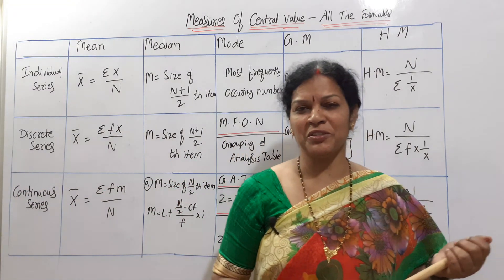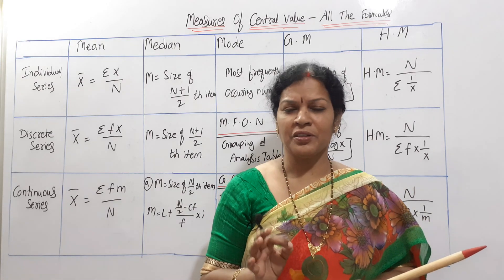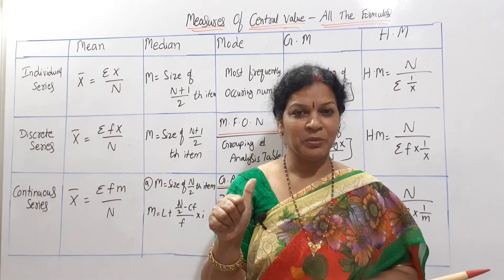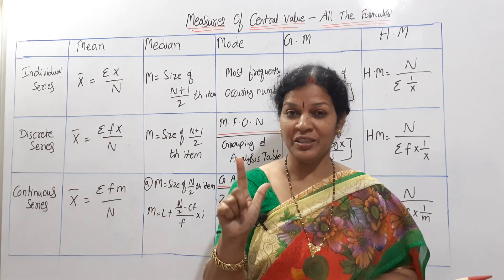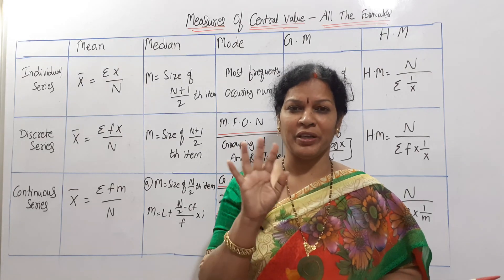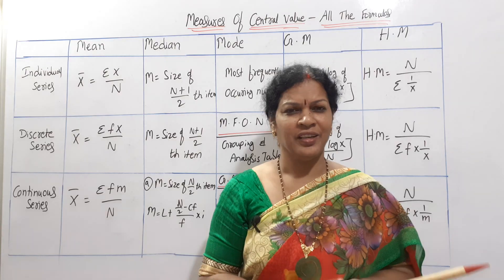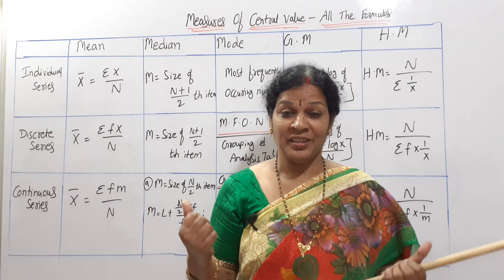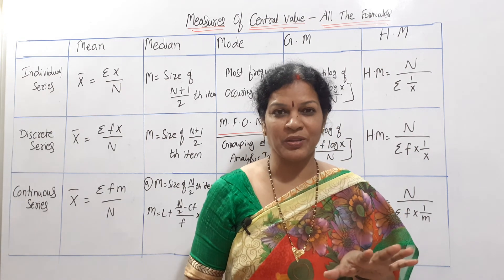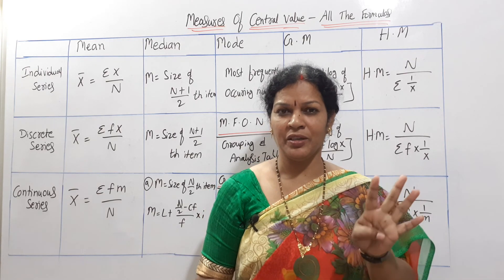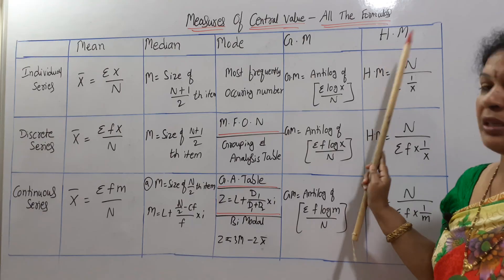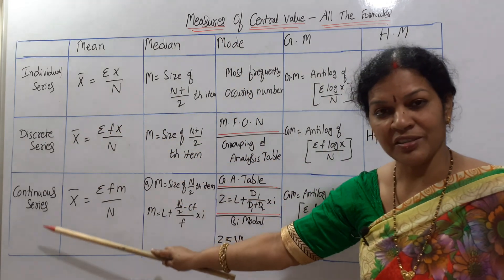Welcome to Devika's Commerce and Management Academy. In this chapter on measures of central tendency, we have learned five topics: arithmetic mean, median, mode, geometric mean, and harmonic mean. All five together — I'll give you all the formulas in individual, discrete, and continuous series, and it will be a recap of the entire chapter.